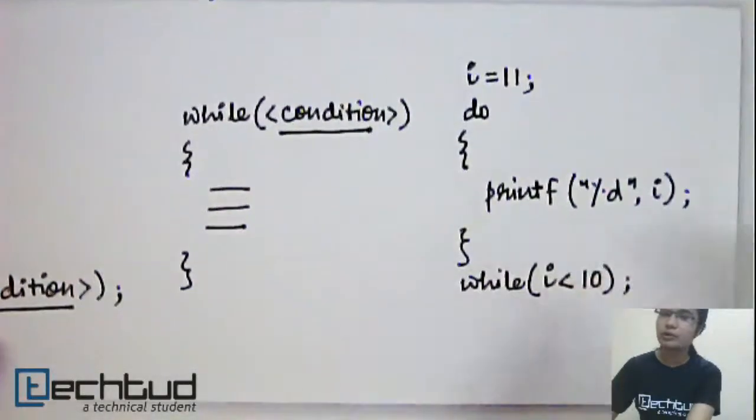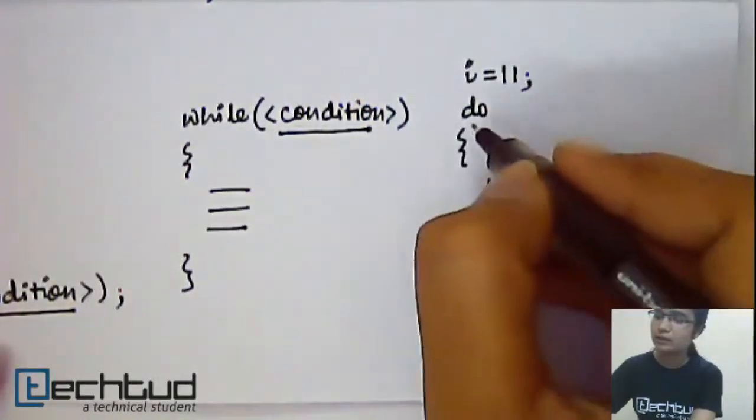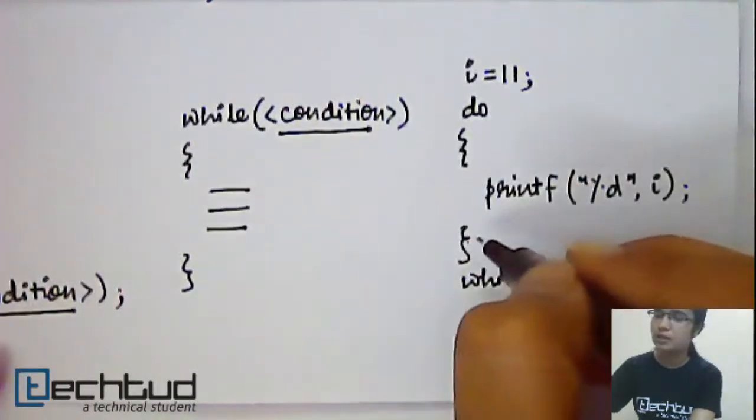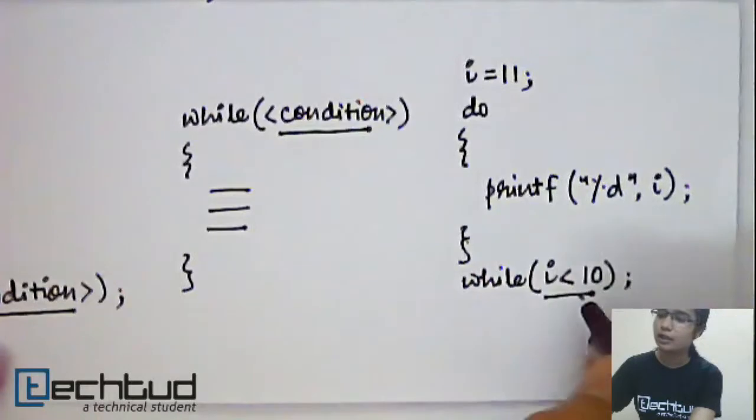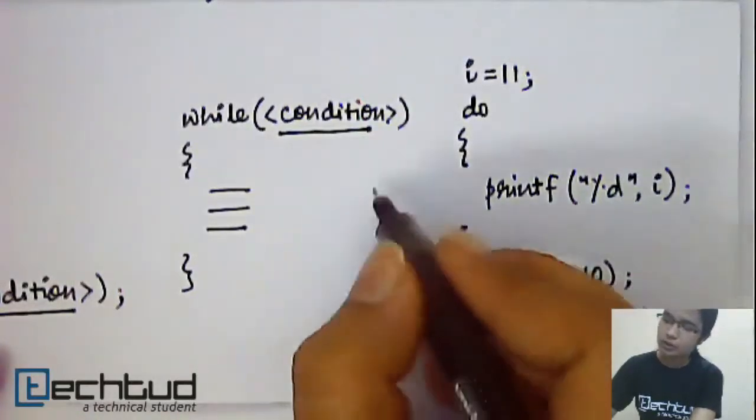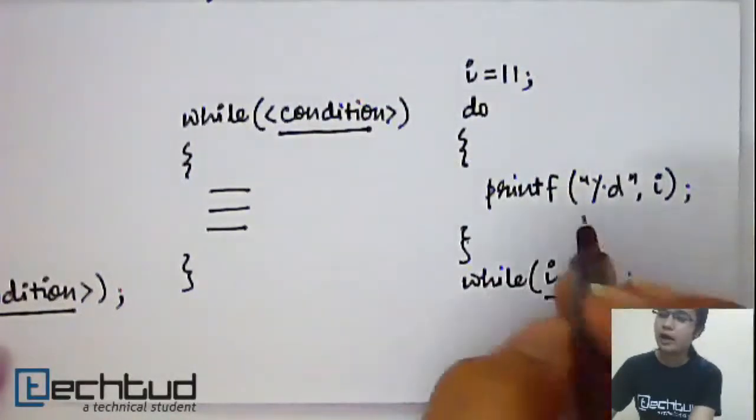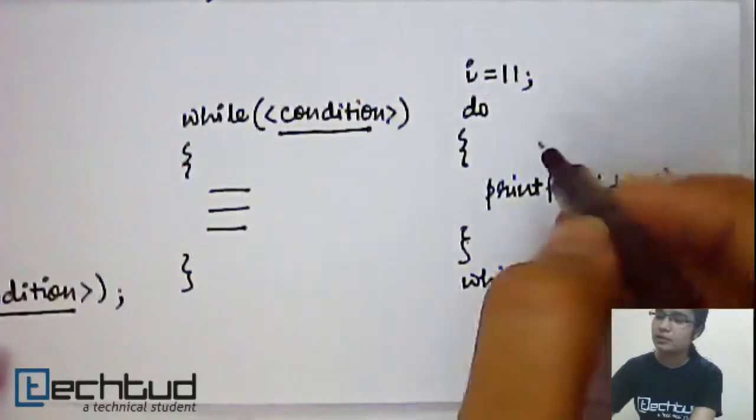So what will happen? The execution will go like this: it will first execute the set of statements in the pair of braces. After that, only it will check for the condition. And if this condition is true, then it will run these statements again iteratively until this condition becomes false.